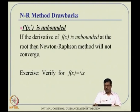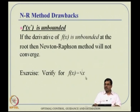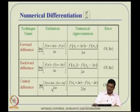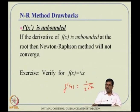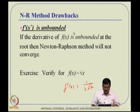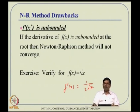Another problem: if f'(x) at the solution point is unbounded (infinity), there is also a convergence issue. For example, f(x) = √x has f'(x) = 1/(2√x), which is infinity at x = 0. Despite being counterintuitive, this causes a problem. Nevertheless, if none of these issues apply or are mitigated by learning rate adjustments, Newton-Raphson converges very fast — that is its beauty.